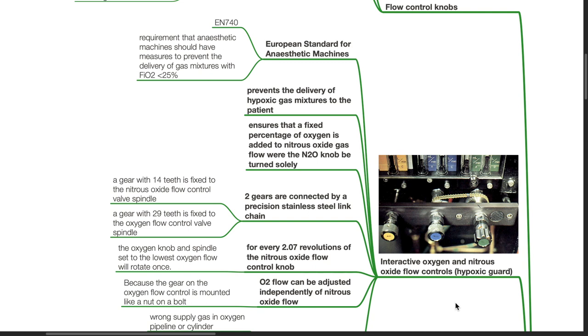It ensures that a fixed percentage of oxygen is added to nitrous oxide gas flow where the nitrous oxide knob be turned solely. Two gears are connected by a precision stainless steel link chain. A gear with 14 teeth is fixed to the nitrous oxide flow control valve spindle and a gear with 29 teeth is fixed to the oxygen flow control valve spindle. For every 2.07 revolutions of nitrous oxide flow control knob, the oxygen knob and spindle set to the lowest oxygen flow will rotate once.